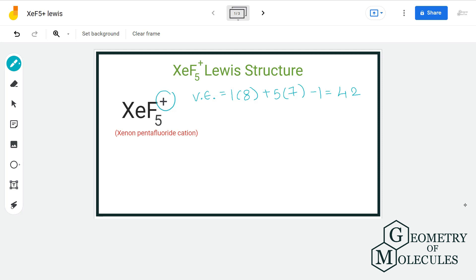For the arrangement of atoms, we will place xenon in the center and arrange fluorine atoms around it. Then we will place electron pairs for bond formation in between each atom.